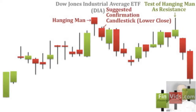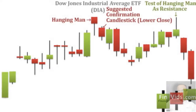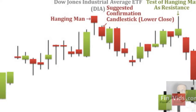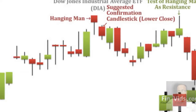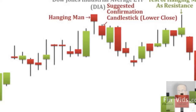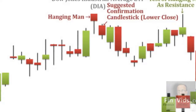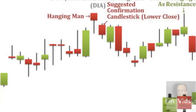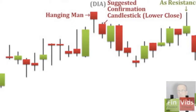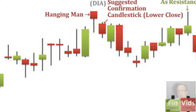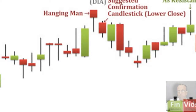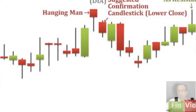Thus, the hanging man line is a top reversal signal that must arrive during a rally, while the hammer is a bottom reversal line that must appear during a decline. The same line can be bullish or bearish depending on the trend preceding it. Interestingly, the Japanese have two words for rice: 'raisu' is rice prepared western style, and 'gohan' is rice prepared Japanese style. What surrounds the rice determines what it is called — so it is with the hammer and hanging man.